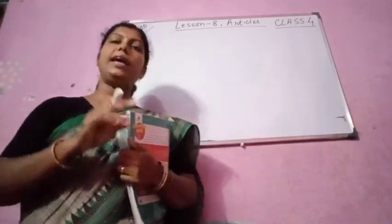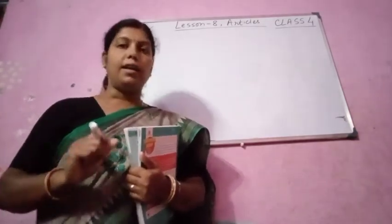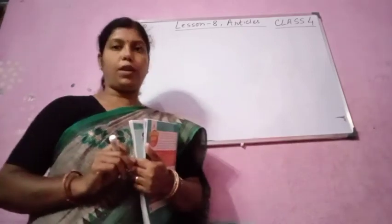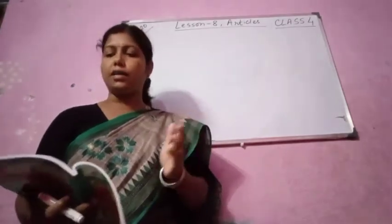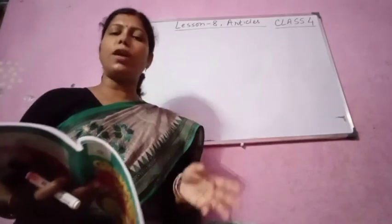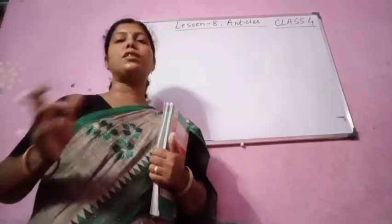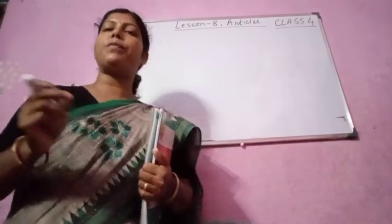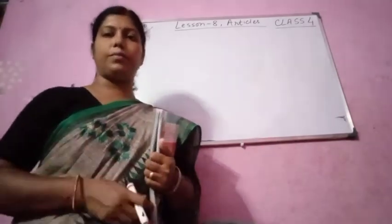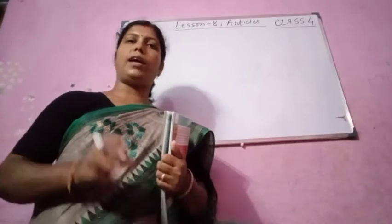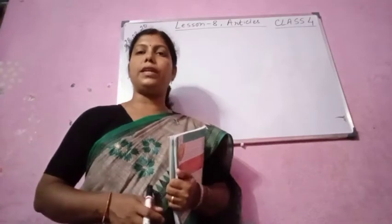So now you see a and an, these 2 are indefinite articles whereas the is a definite article. Now we use a or an before a singular noun which is countable. We use it before one thing, one unit. A ball, a cat, a doll, an elephant, an egg, an aeroplane.